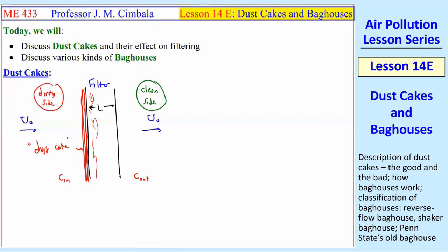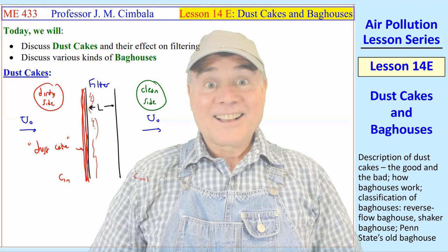The simplest example I can think of is the dust cake that builds up on your dryer. When you're drying clothes, there's always a little filter that you have to clean, and you see a buildup of lint and dust that builds up on the dirty side of that filter. The same thing happens in any kind of a filter.